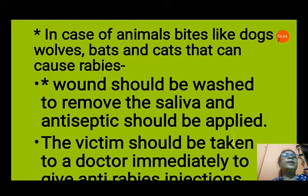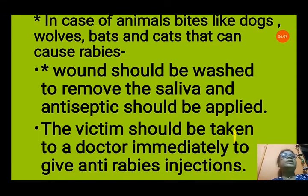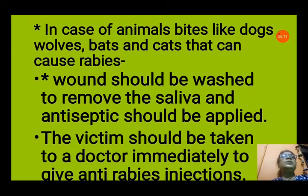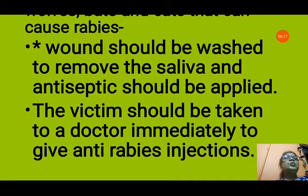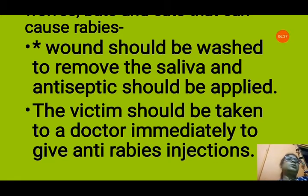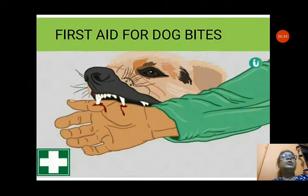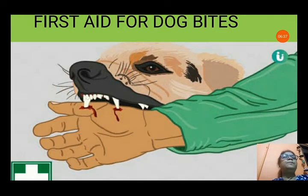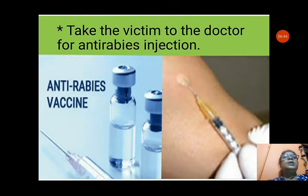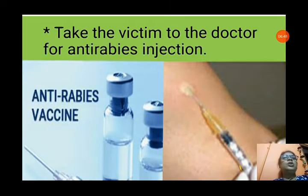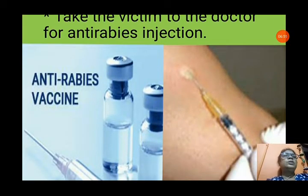In case of animal bites from dogs, wolves, bats and cats that can cause rabies — a very dangerous disease caused by a virus present in the saliva of these animals — the wound should be washed to remove the saliva and antiseptic should be applied to lessen the germs. The victim should be taken to a doctor immediately to receive an anti-rabies injection. Wash the wound thoroughly with soap and water, and anti-rabies injection must be given by the doctor.